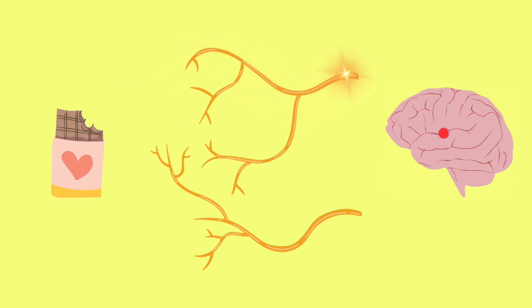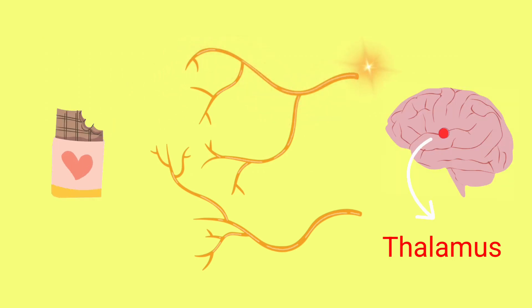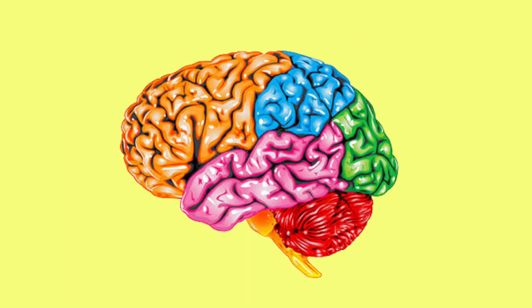Once these receptors are stimulated, they generate an electrical signal, which is relayed to the thalamus, which then sends it to the appropriate area in the brain for interpretation.